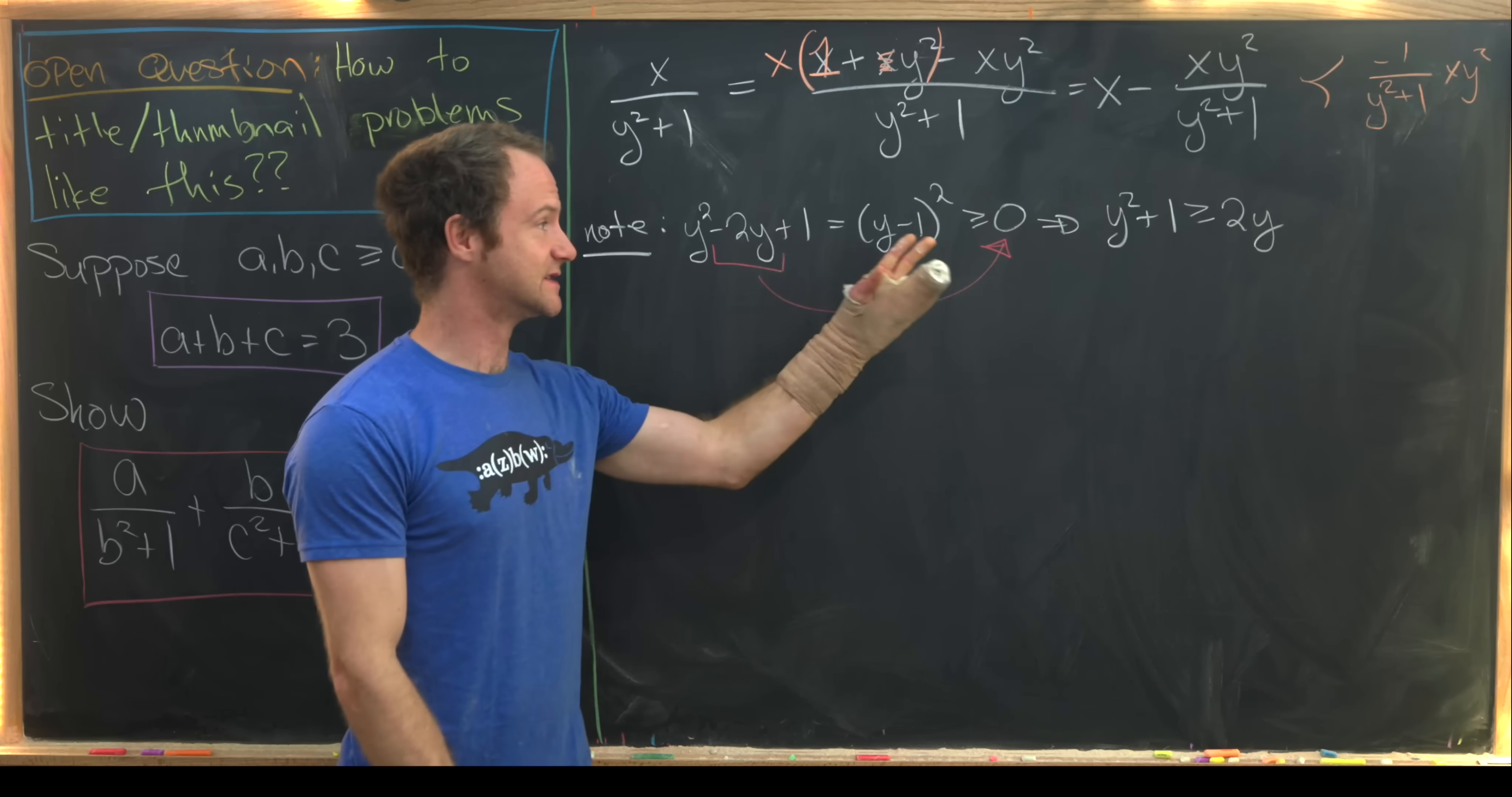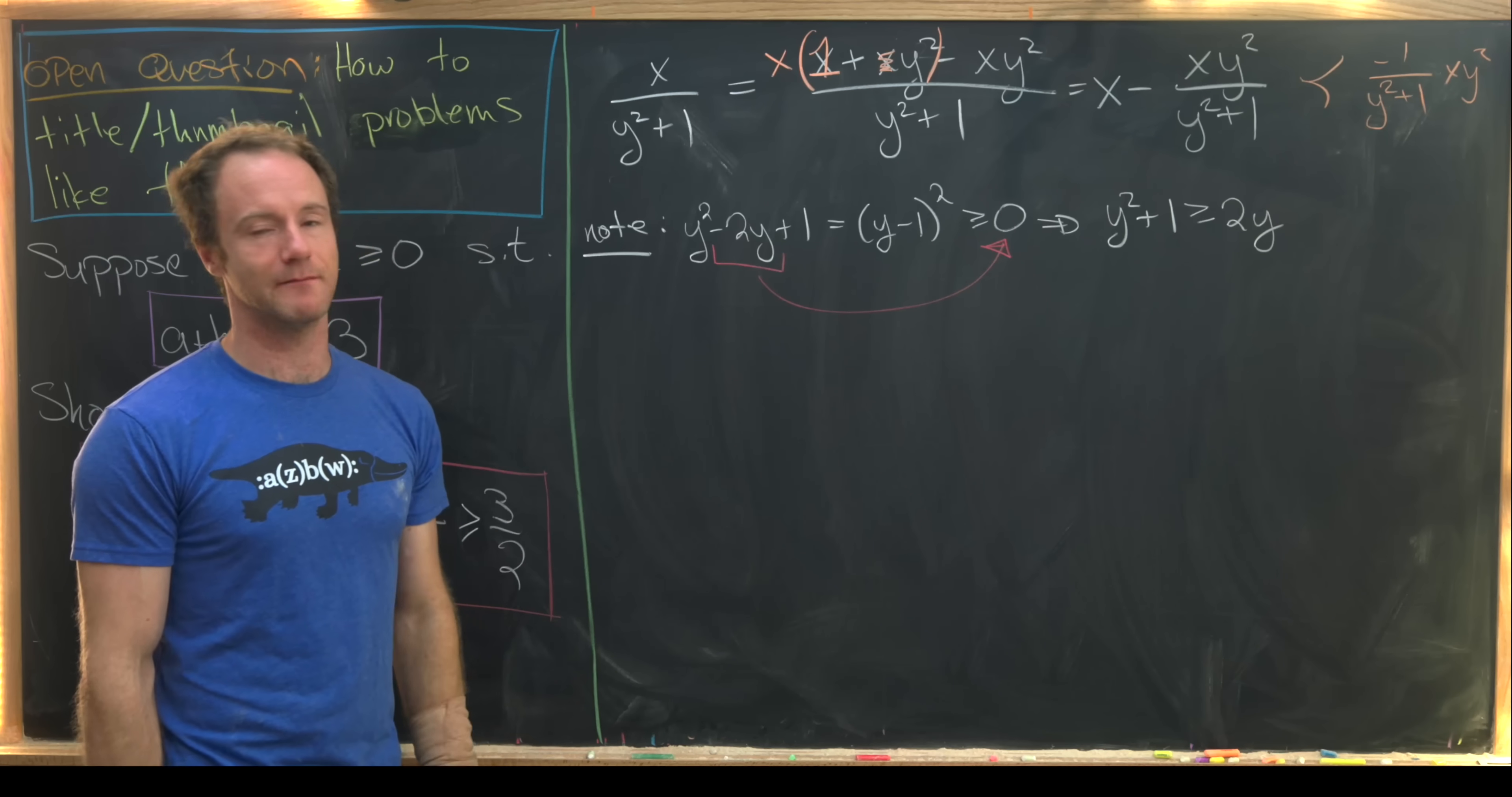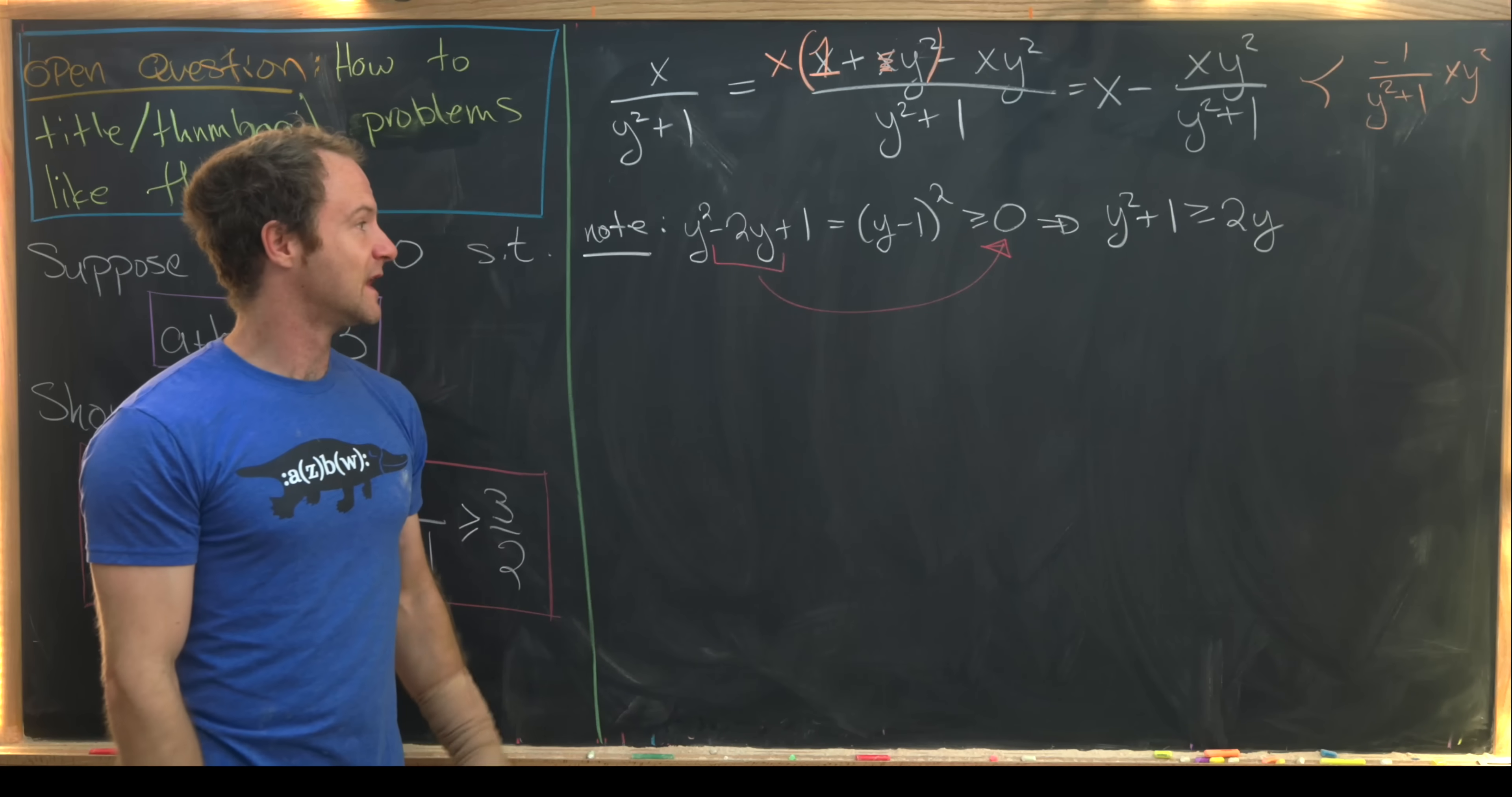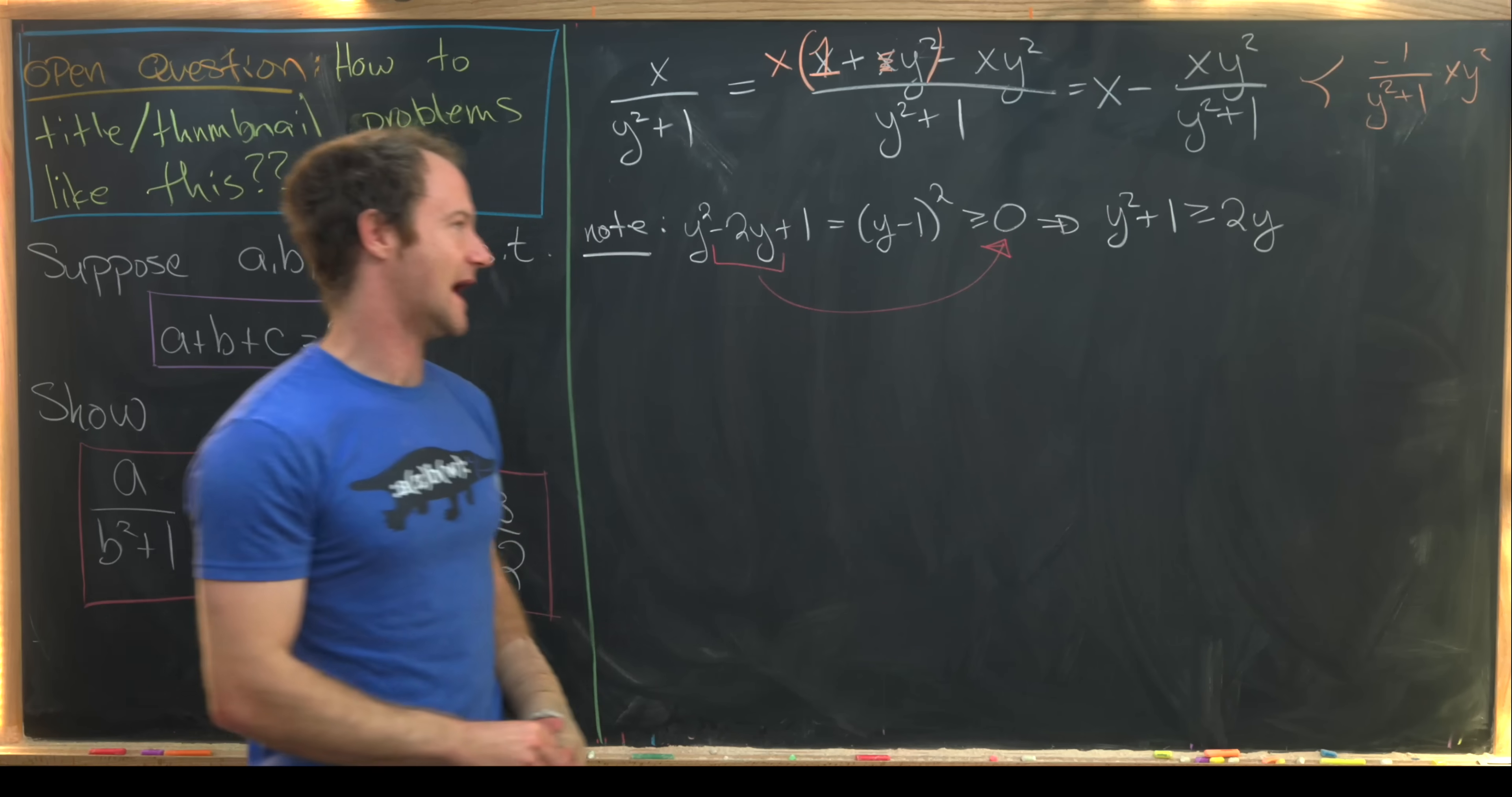And that is by first taking the reciprocal and then multiplying by minus 1. So let's notice that taking the reciprocal will change the order of the inequality, and then multiplying by minus 1 will change it back.